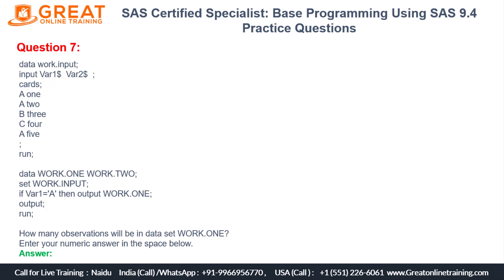Let's first reason through it without running SAS. We already have five observations in the input dataset, so the answer should be more than five. Among those five, the rows where var1 equals 'A' are: A1, A2, and A5 — that's three observations. So those three rows get output into work.one.